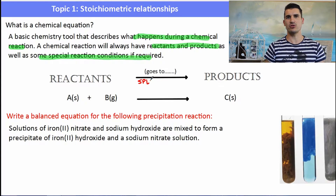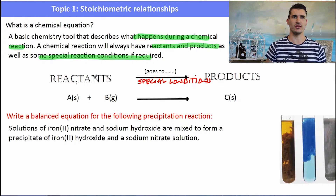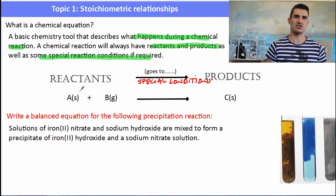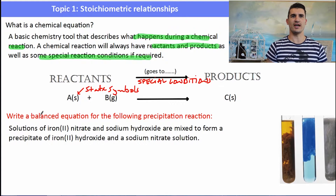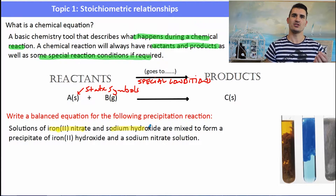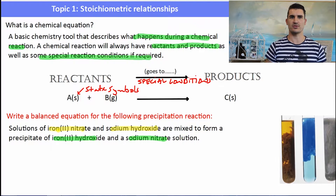Special conditions go on top of the arrow — for example, photosynthesis requires UV light, so UV light would go there. State symbols indicate whether something is a solid, liquid, gas, or aqueous. In IB chemistry, we always need to write state symbols with any reaction. Here's an example: solutions of iron(II) nitrate and sodium hydroxide are mixed to form a precipitate of iron(II) hydroxide and sodium nitrate.